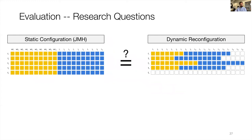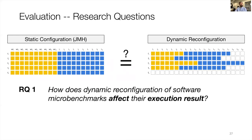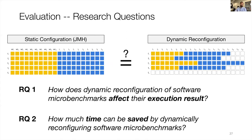To evaluate our approach, we looked at how JMH works today — the static configuration — and compared it to dynamic reconfiguration with each of the three stoppage criteria. We formulated two research questions: first, how does dynamic reconfiguration of software microbenchmarks affect the execution result? This is basically about whether dynamic reconfiguration changes the stability of the results. Second, how much time can be saved by dynamically reconfiguring software microbenchmarks?